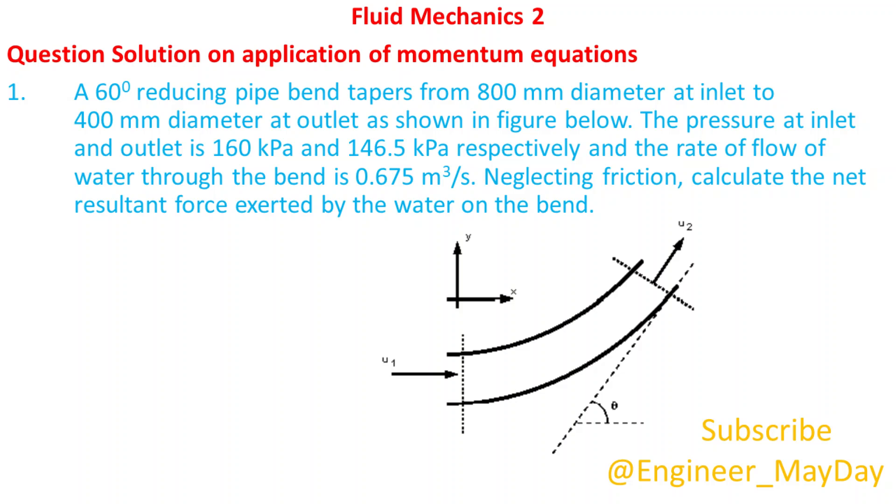Let's tackle this question. A 60 degree reducing pipe bend tapers from 800 mm diameter at inlet to 400 mm diameter at outlet as shown in figure below.